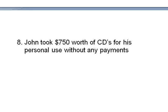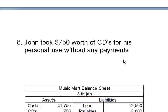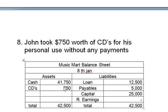Transaction eight: John took 750 dollars worth of CDs for personal use without any payment. He walked into the shop and took the CDs home for his own use. The CDs account decreases by 750, and since there is no payment, it is effectively a loss recorded in retained earnings. CDs go from 1,500 to 750, and retained earnings become zero.